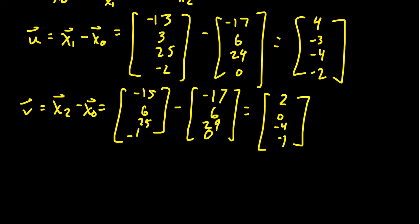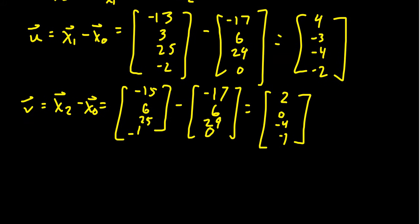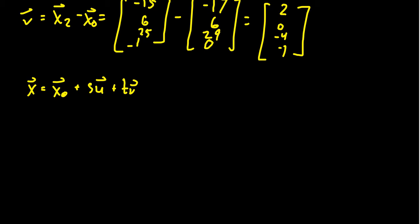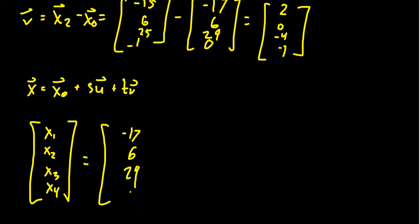Therefore, using these spanners right here, our vector equation in general will look like x = x₀ + su + tv. And so if we plug in specifically what those things mean, we're talking about a plane in R⁴. So our x is going to look like (x₁, x₂, x₃, x₄). Like so. x₀, as we've been using it here, we had (-17, 6, 29, 0).